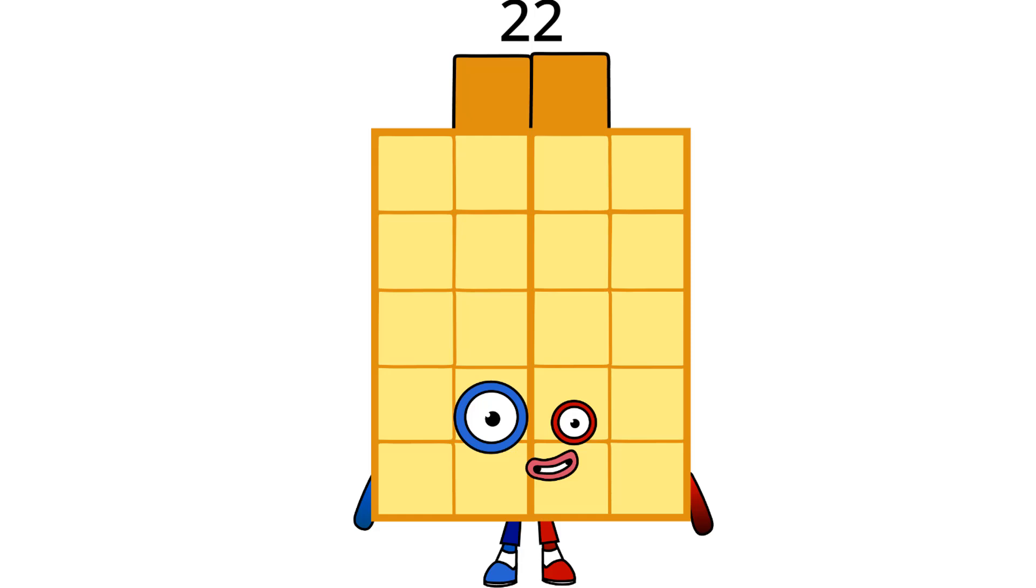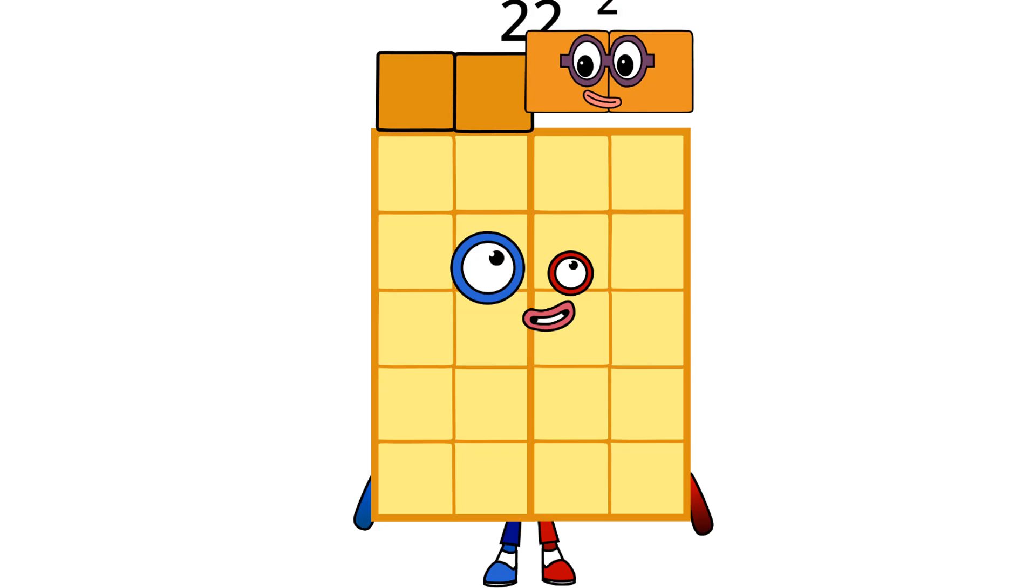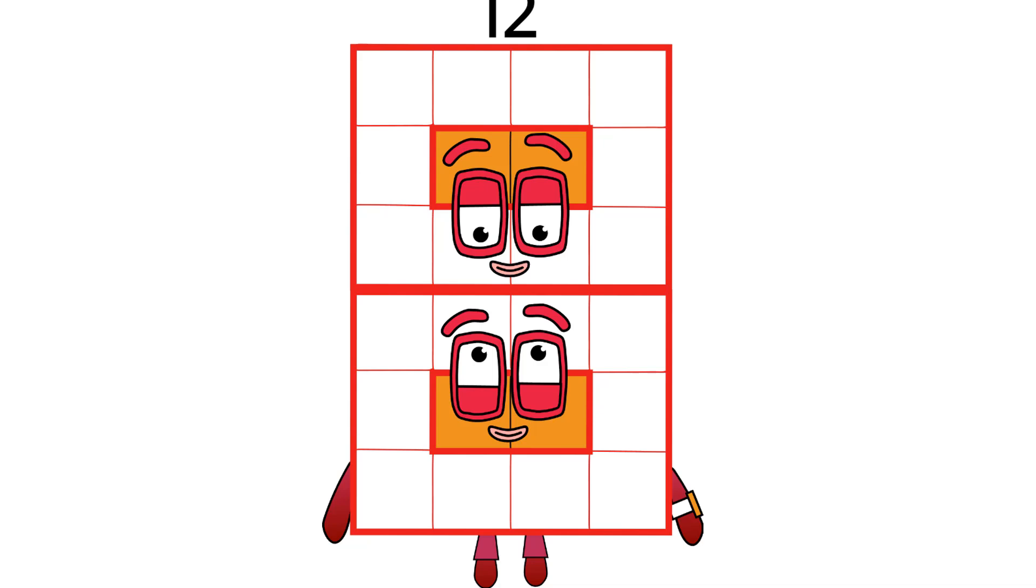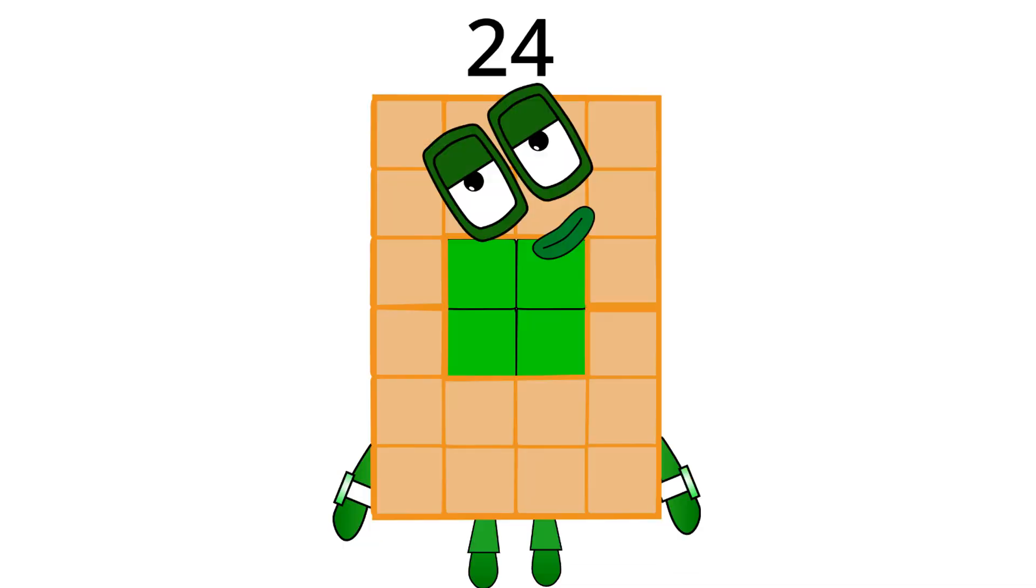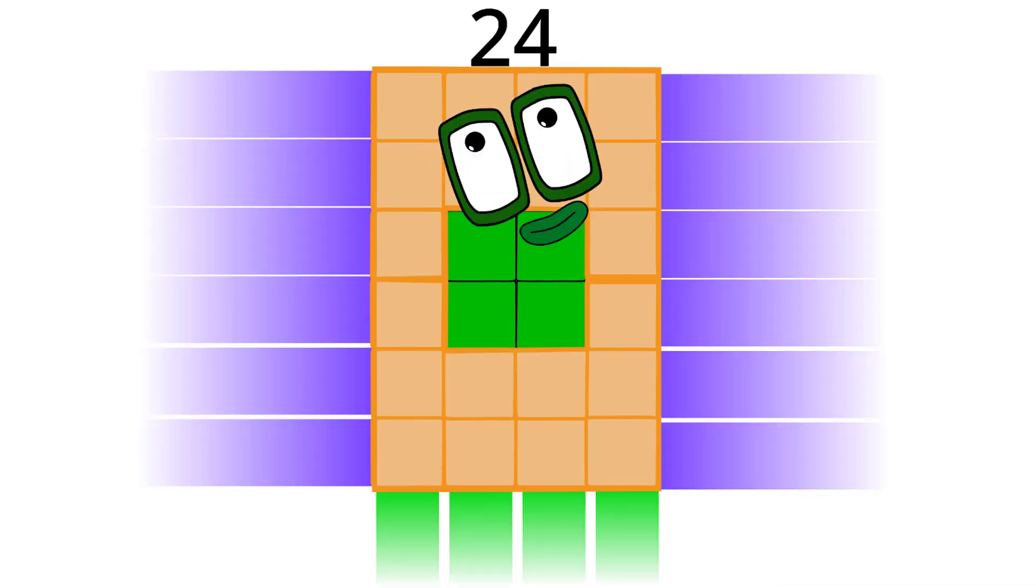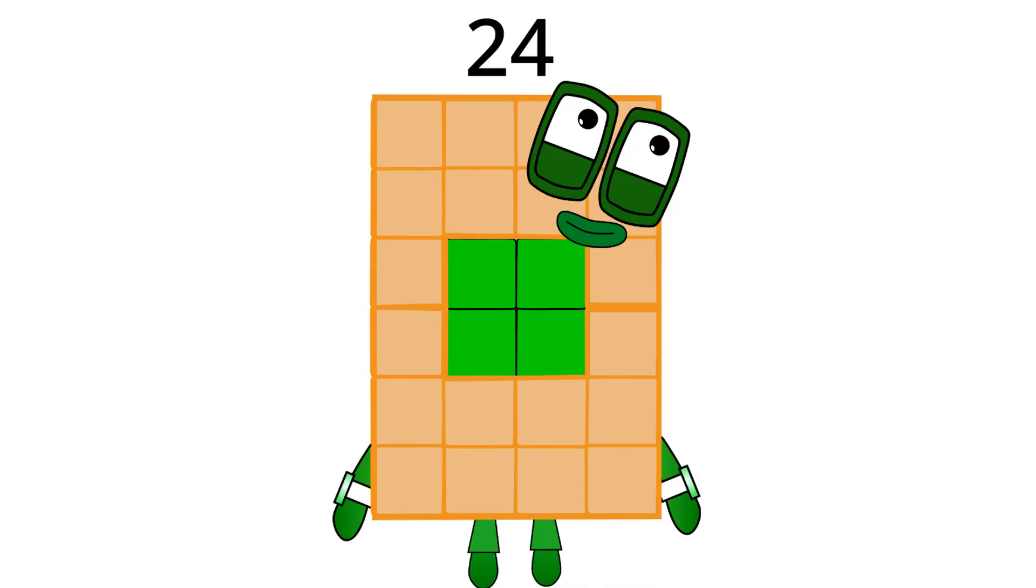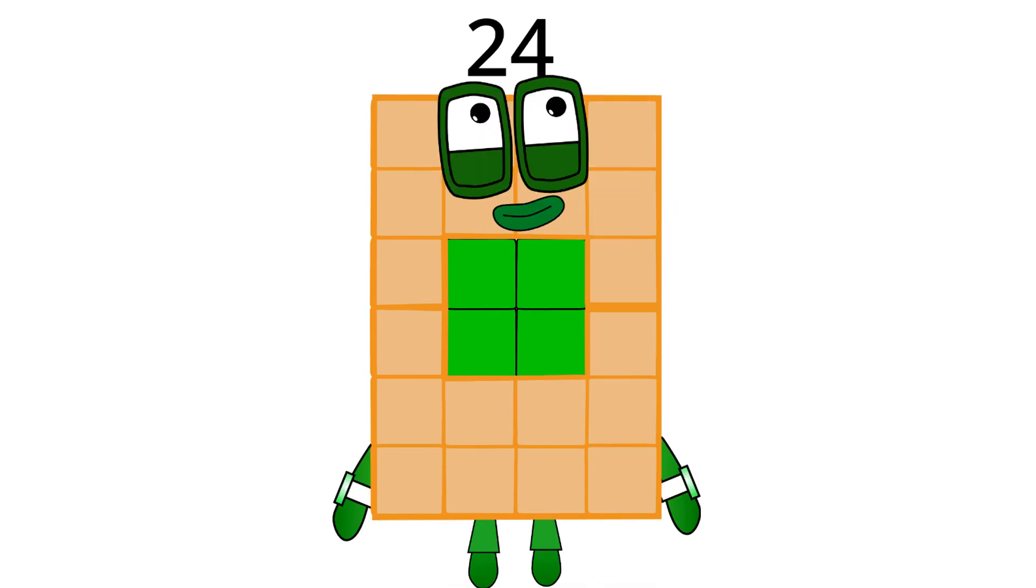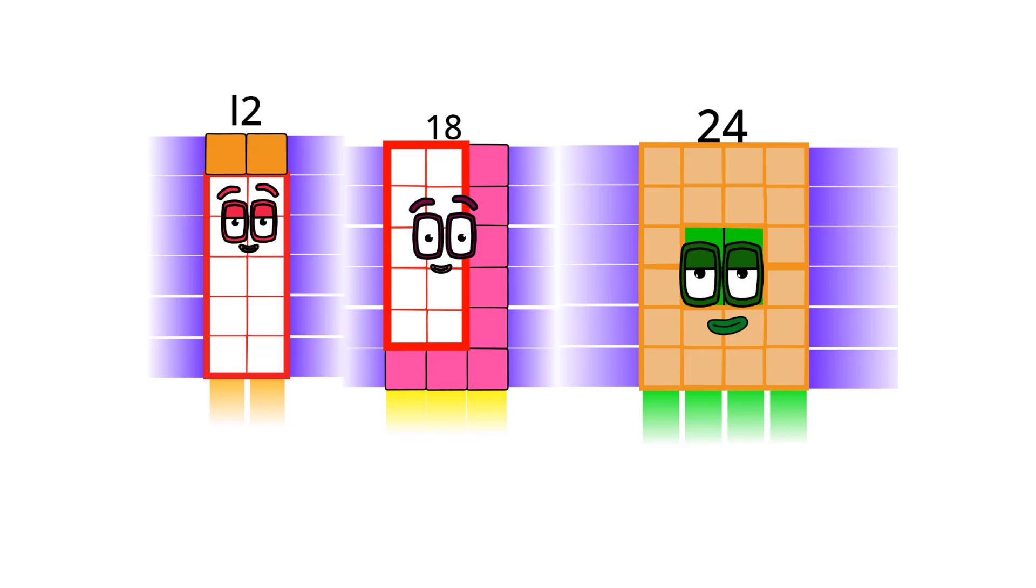If you said 24, you're correct. Hello, I am 24 and I am double 12, which means I am a super rectangle. I like to go fast like 18, because I am faster. If you want to learn more about super rectangles like me, here it is.